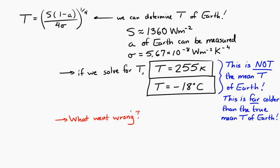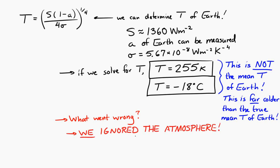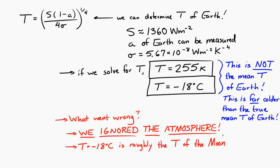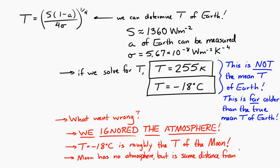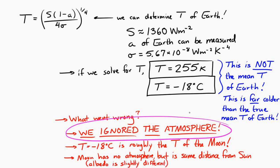What went wrong is that Earth has an atmosphere. A temperature of negative 18 degrees Celsius is roughly the average temperature of the Moon, which has no atmosphere but is approximately the same distance from the Sun. The Moon has a slightly different albedo, but the big difference is that Earth has an atmosphere, and that strongly affects Earth's average temperature. One of the primary ways the atmosphere affects temperature is through the greenhouse effect.